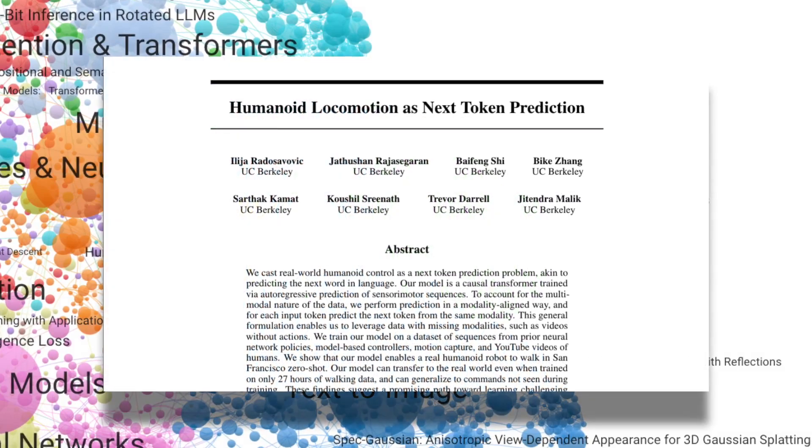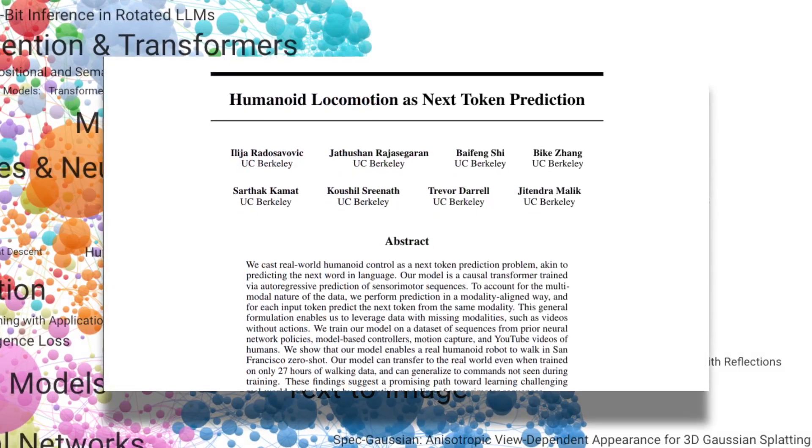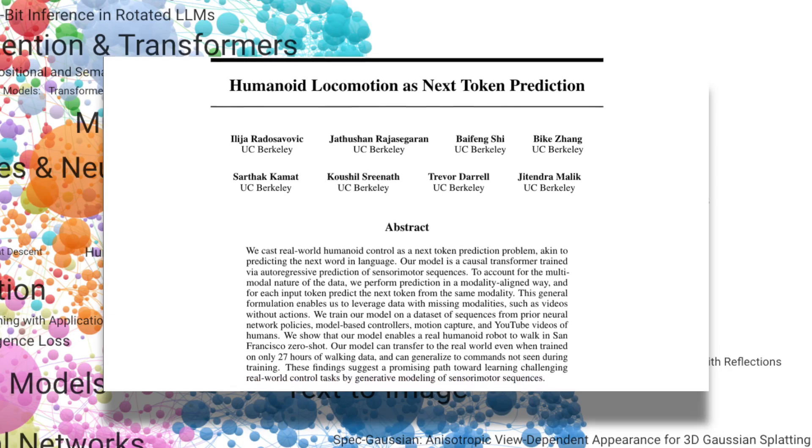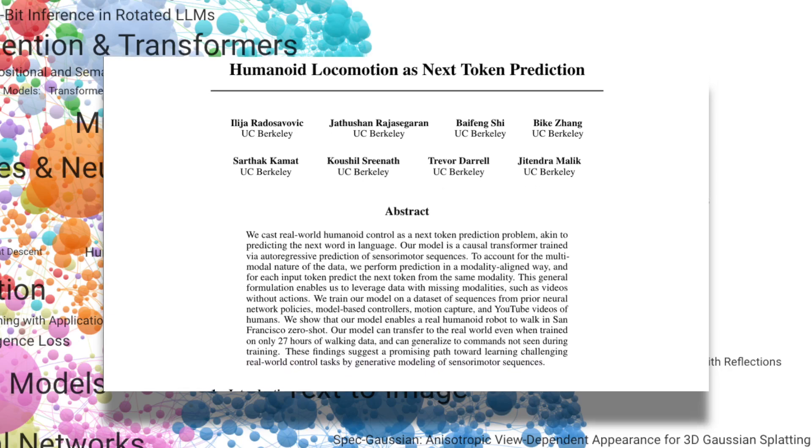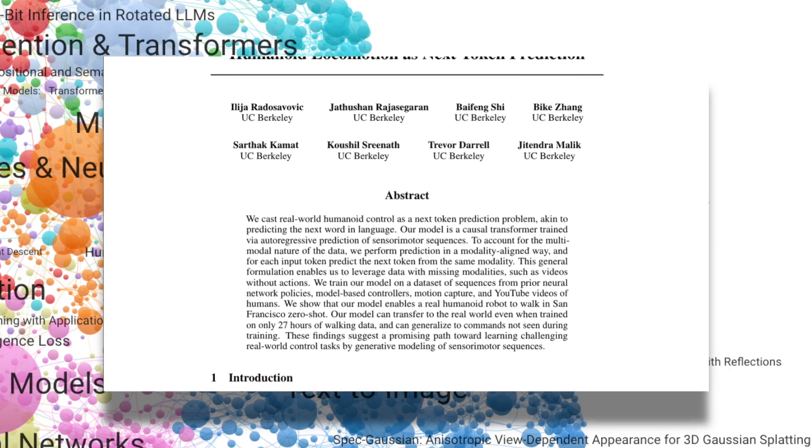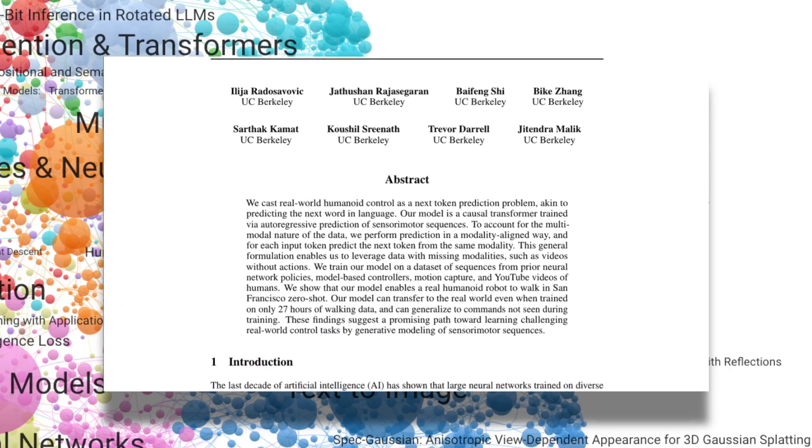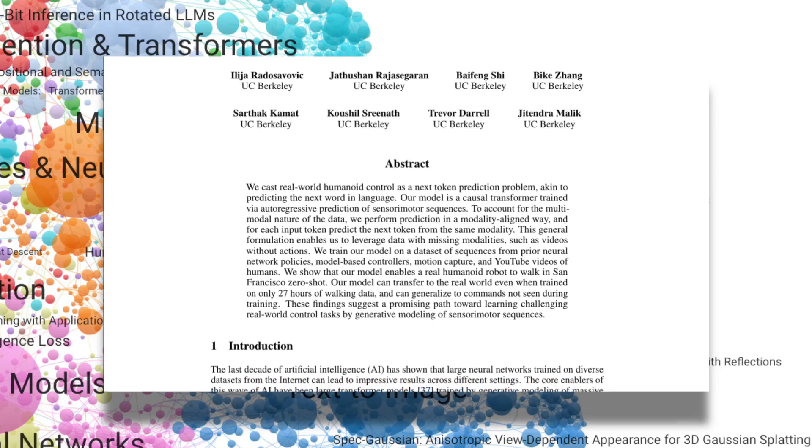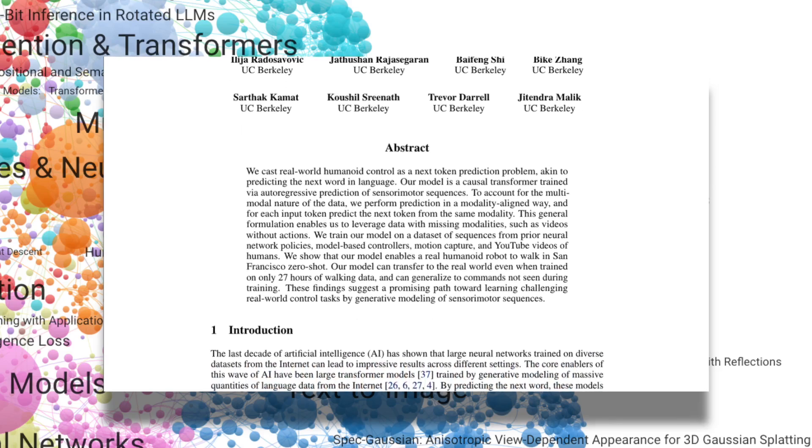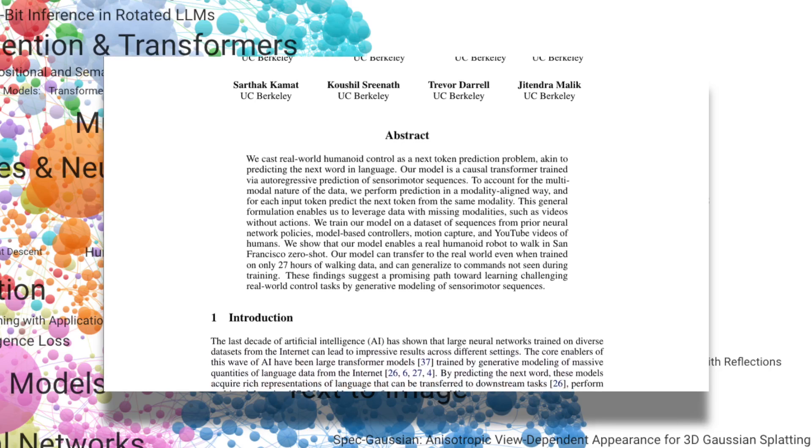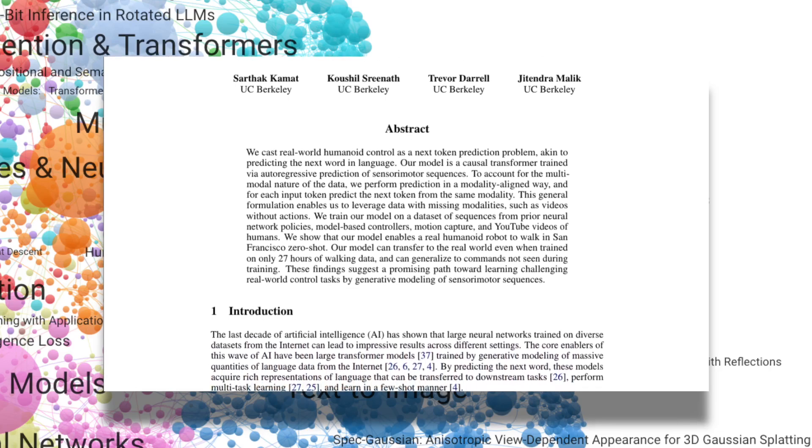A team from UC Berkeley reframed humanoid control as a next-token prediction problem, similar to language modeling. Using a causal transformer trained on diverse sensorimotor datasets, including YouTube videos, they enabled a robot to walk in real-world environments, with a variety of different environments, like the streets of San Francisco, zero-shot.